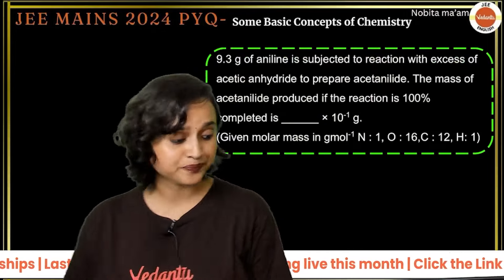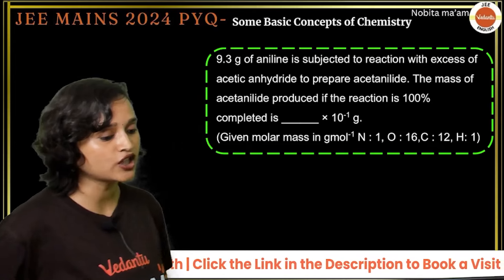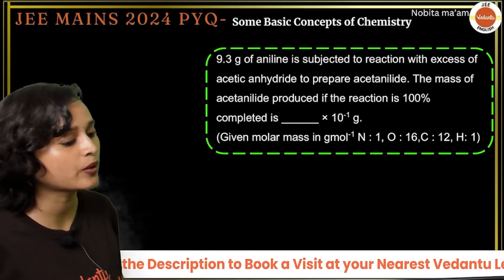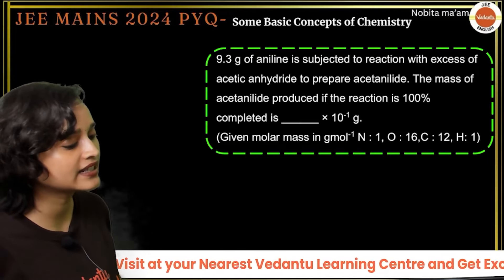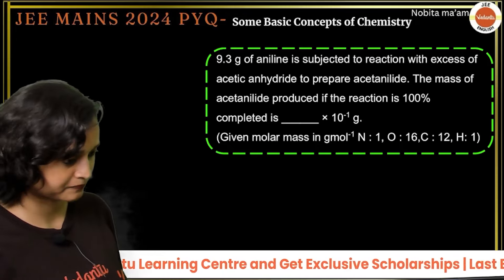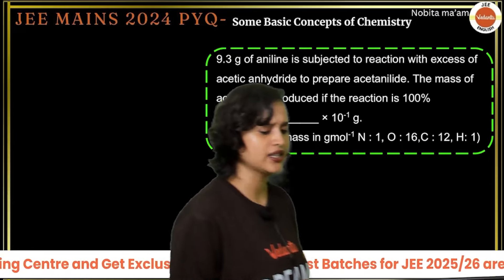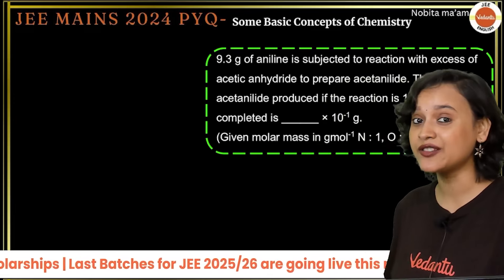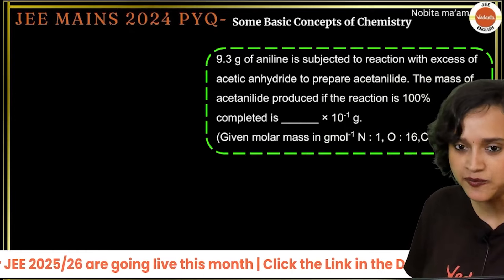The next question: 9.3 grams of aniline is subjected to reaction with excess of acetic anhydride to prepare acetanilide. The mass of acetanilide produced if the reaction is 100% completed is given as (dash) × 10⁻¹. Molar masses are provided. For this we need to know the organic chemical reaction.